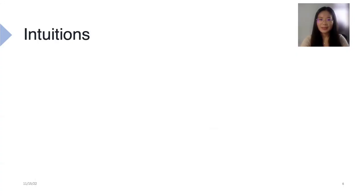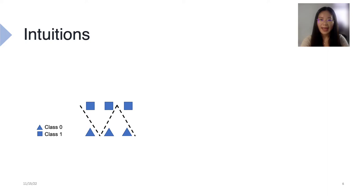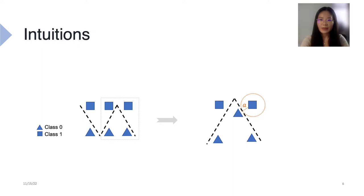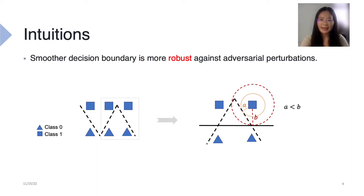We start by introducing the basic intuitions behind our approach. We have two classes and we want to train a neural network to classify them. It may give us a smooth decision boundary or a zigzag one. Both can accurately separate the data. Consider an attacker that tries to mislead our model by injecting adversarial perturbations. Under the zigzag decision boundary, a small perturbation of length a is sufficient to flip the prediction. Under the smooth decision boundary, it needs a larger perturbation b to flip the prediction. Since a is less than b, a smoother decision boundary is more robust against adversarial perturbations.